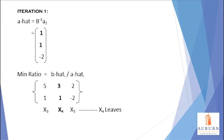For the min ratio test, we transpose the B-hat vector into a row and set that as the denominator. The ratios are then calculated. If any of the A-hat component values are negative, that column is excluded from consideration. From the options available, we choose the column with the smallest ratio. In this case, the X4 column equals 3, which is the smallest value, so X4 should leave the basis.